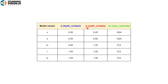YOLO 11 has five variants: N for nano, S for small, M for medium, L for large, and XL for extra large. To determine the YOLO 11 variant, there are three parameters: depth multiple, width multiple, and max channels. The depth multiple parameter determines how many bottleneck blocks are in the C3K2 block and PSA blocks in the C2PSA block. The width multiple and max channels parameters determine the output channel.